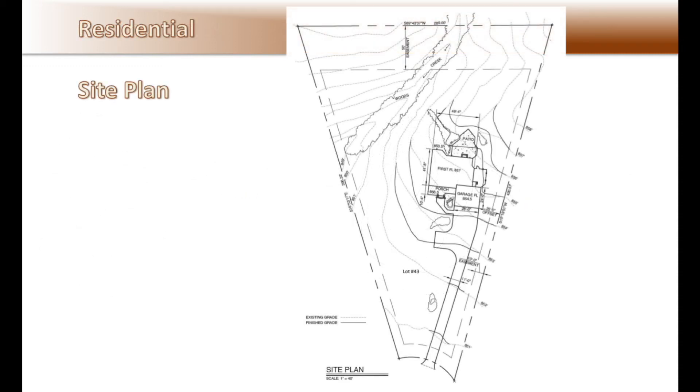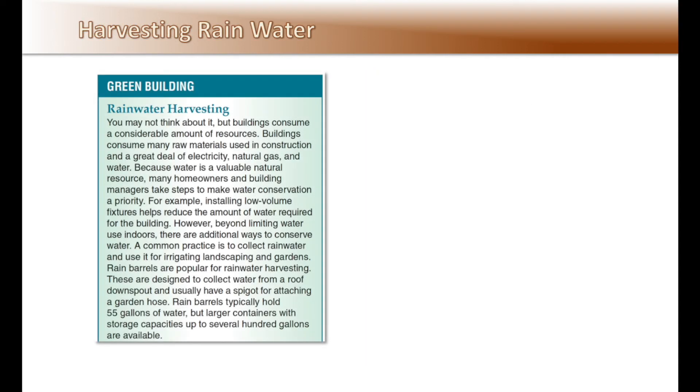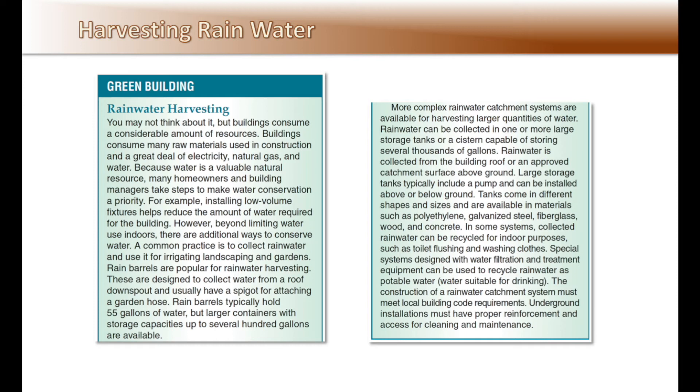This site plan would be typical of a residential site plan, locating the house with grading information. Working with existing vegetation is important. Architects can take many factors into account when planning the location of a building on a piece of property. One of the most important factors is the existing vegetation on the property. When it is not possible to build around one or more trees, the architect may consider relocating them to another place on the property. I am not going to read all this text to you that is in the book on page 138, but would like you to consider thinking about the amount of resources buildings consume in water and other raw materials. Buildings consume a great deal of electricity, natural gas, and water. Because water is a valuable natural resource, many homeowners and building managers take steps to make water conservation a priority.